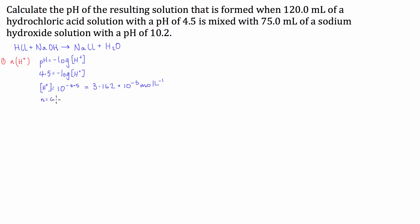The number of moles is equal to the concentration times the volume. So this is going to equal 3.162 times 10 to the negative 5, multiplied by the volume. This has to be in litres, so it's 0.12. We find that that is equal to 3.794 times 10 to the negative 6 moles. That's the moles of H⁺ in the hydrochloric acid solution.